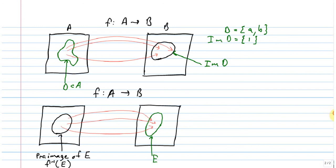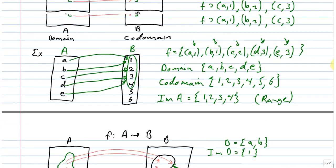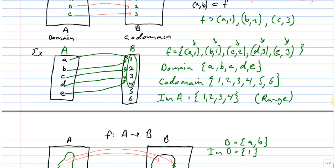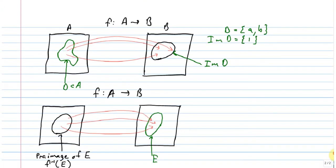So if I look back at this example here, and I picked, let's say, the set {3, 4, 5, 6} in the codomain. So let's let E equal {3, 4, 5, 6} in the codomain of the example we did prior.